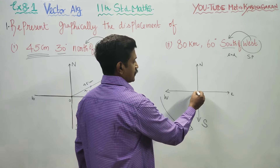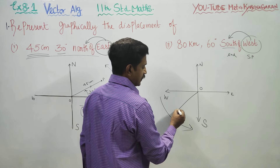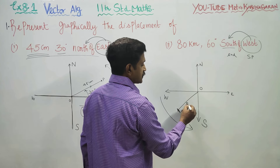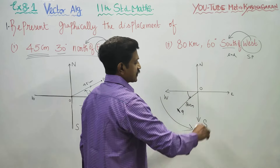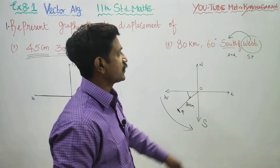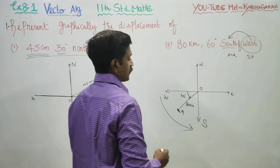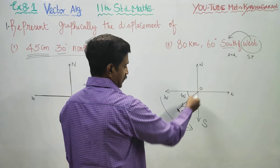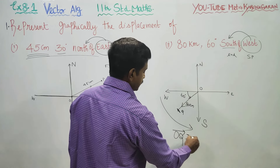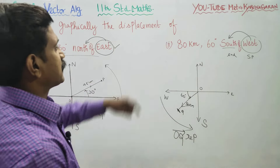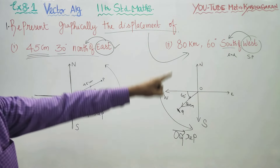80 km. Choose some origin point O and some point Q. This length is 80 km. What direction? West towards south — that is the direction. This is the displacement of 80 km, 60 degrees south of west.